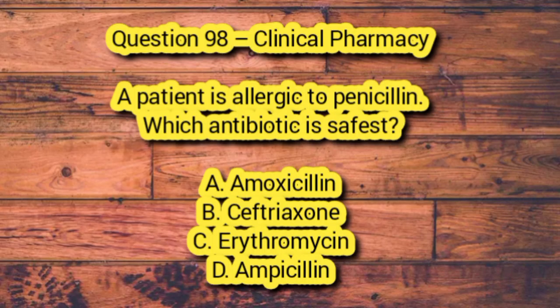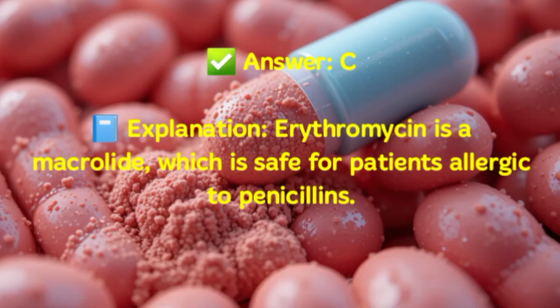Question 98 – Clinical Pharmacy. A patient is allergic to penicillin. Which antibiotic is safest? A. Amoxicillin. B. Ceftriaxone. C. Erythromycin. D. Ampicillin. Answer: C. Explanation: Erythromycin is a macrolide, which is safe for patients allergic to penicillins.